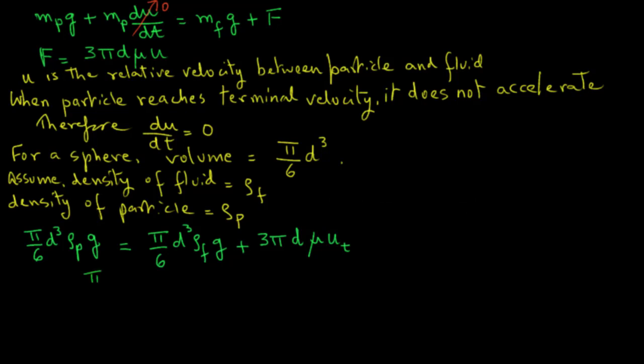Rearranging some of the terms, we can write pi over 6 times d cube g, and in the parenthesis, we have rho p minus rho f. We obtain this by moving the first term on the right-hand side to the left-hand side, and that equals 3 pi d mu times ut. Now pi will cancel out, and again rearranging the terms, we have ut equals d square g times rho p minus rho f divided by 18 times mu.